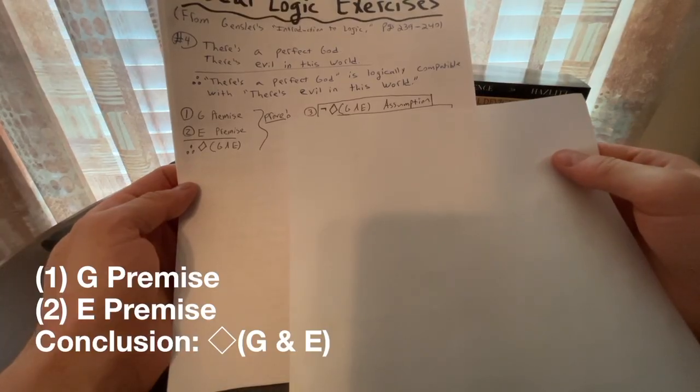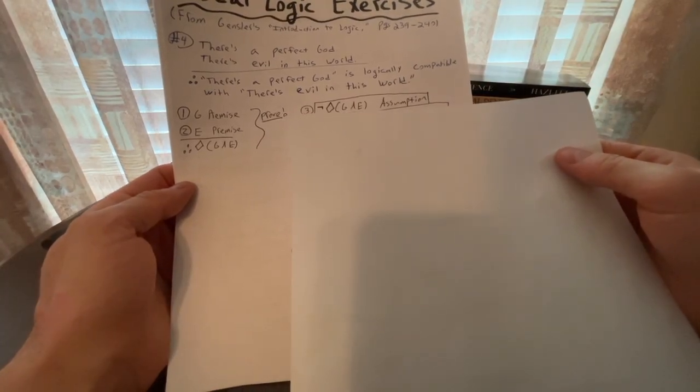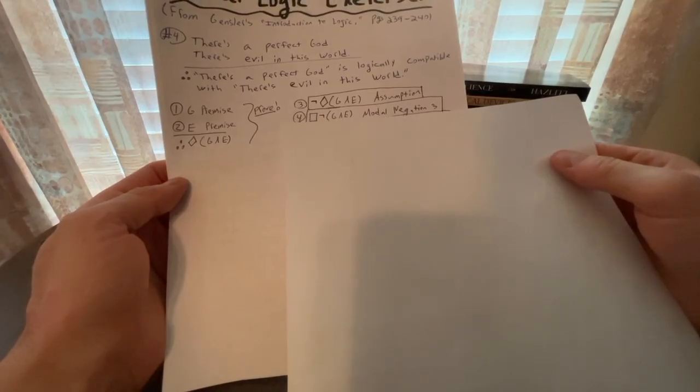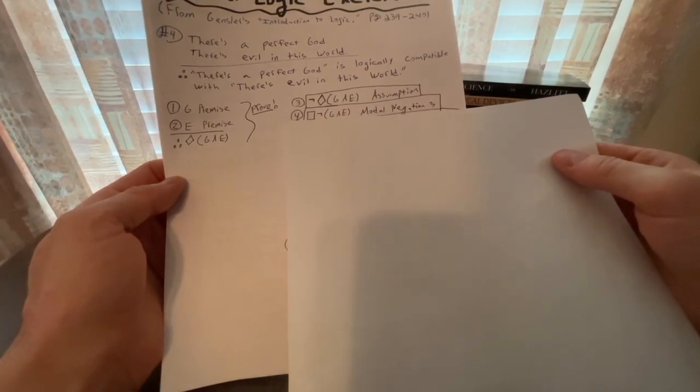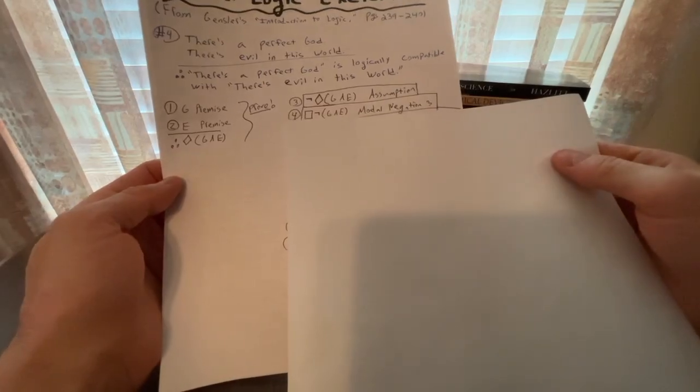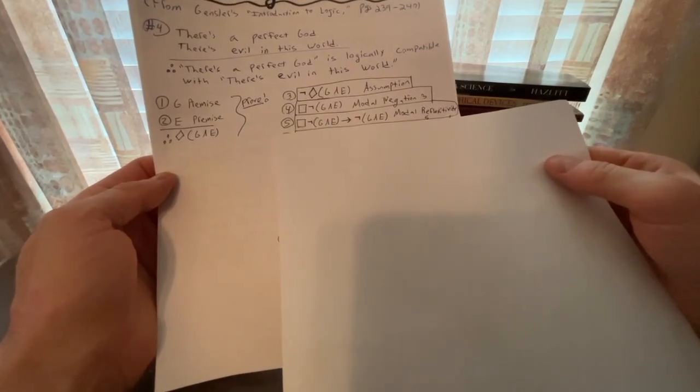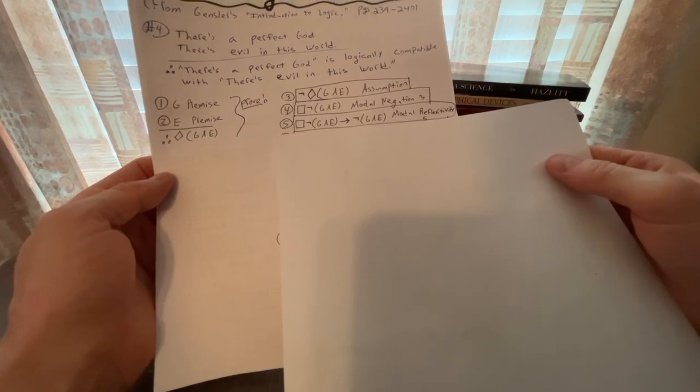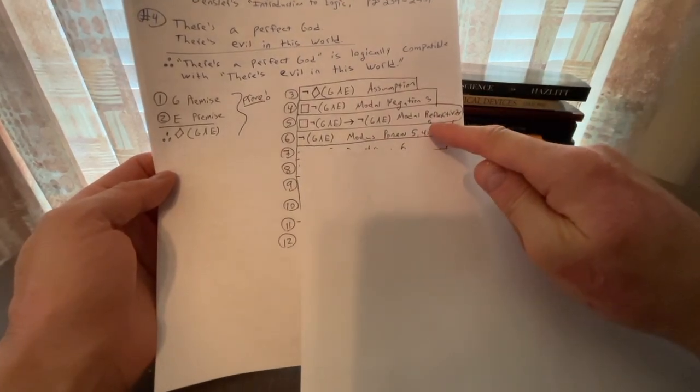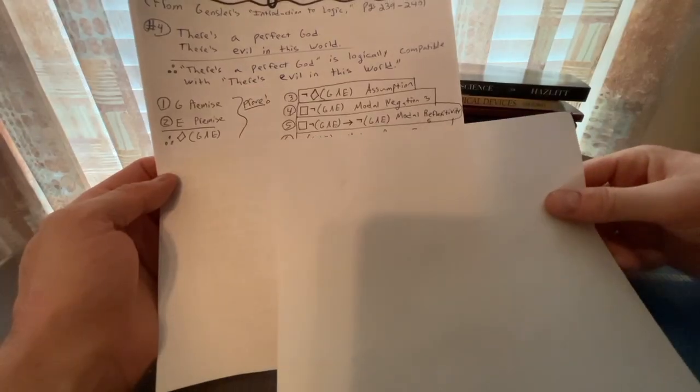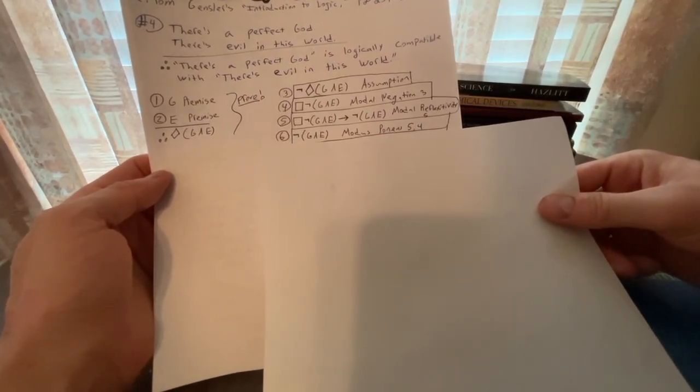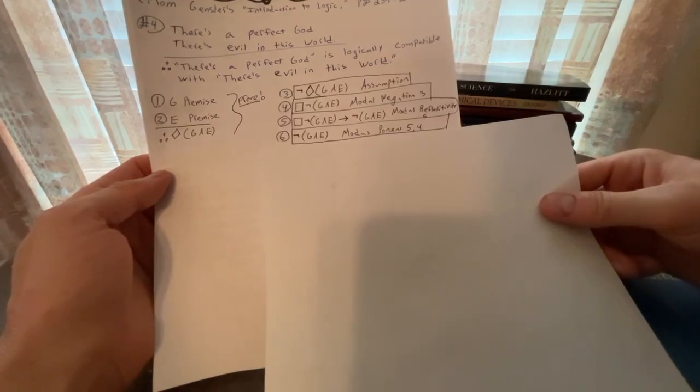We're going to do a reductio ad absurdum proof. So we're going to start with the assumption of not diamond both G and E and then do a modal negation, hence box not both G and E. And from there, we can use modal reflexivity. And I made a mistake with the number there, it's not five, it's four. We get box not both G and E arrow not both G and E. And then we can do a modus ponens to get not both G and E, modus ponens five and four.